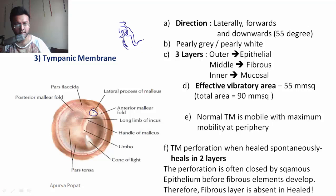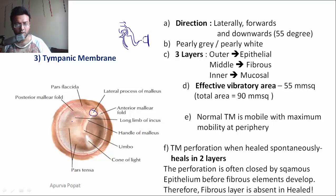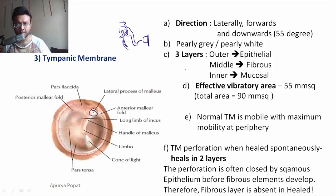After the malleus, we have the incus — with its long process and lenticular process — the stapes superstructure, and the footplate of the stapes. You can also see the lenticular process of the incus, the incudostapedial joint (which is a ball-and-socket type synovial joint), and sometimes the oval window niche and round window niche.